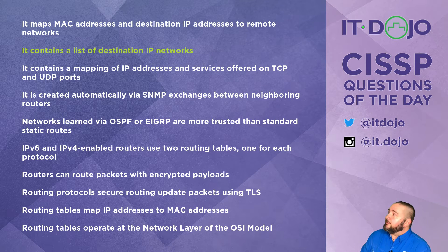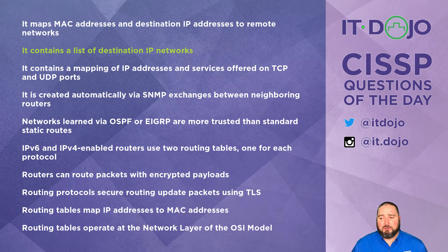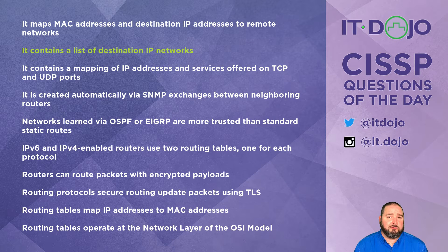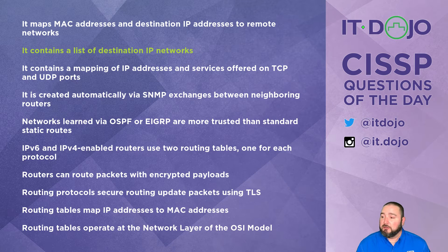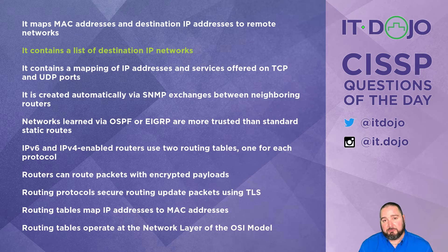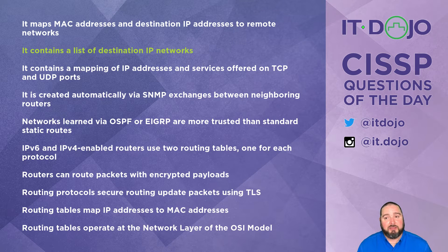How about: it contains a mapping of IP addresses and TCP and UDP ports for particular services? No — there's nothing about TCP or UDP ports ever involved in a routing table. Next: it is created automatically via SNMP exchanges between neighboring routers. Also not true at all. SNMP has nothing to do with the creation of routing table entries. We use directly connected networks, static routes, or routing protocols to build our routing table. SNMP is doing something else entirely.